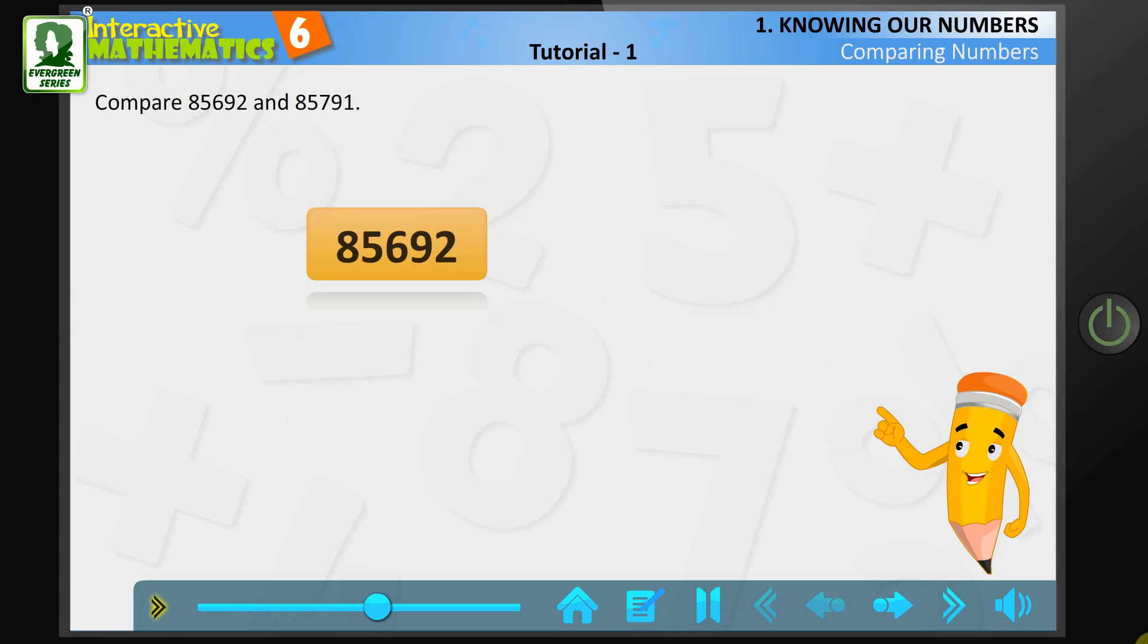Let us compare 85,692 and 85,791. If both the numbers have the same digits in the leftmost place,